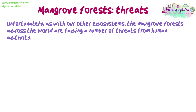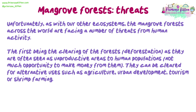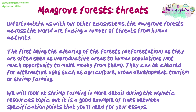Mangrove forests across the world are facing a number of threats from human activity. The first is deforestation — they are often seen as unproductive areas by human populations with not much opportunity to make money. They can be cleared for alternative uses such as agriculture, urban development, tourism or shrimp farming. Shrimp farming in particular is a good example of links between specification points that you'll need for your essays.